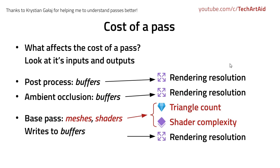So what can affect the cost of a pass? I recommend looking at its input and its output. If something takes in the screen and the g-buffer but not any geometry, like the post-process does, then it will be pixel-bound — working on pixels — and won't be affected by the amount of triangles in your scene or other optimization issues of your meshes. The same goes for ambient occlusion. By knowing how ambient occlusion works in Unreal, you will know that geometry doesn't affect its cost, because ambient occlusion is a post-process operation using the hierarchical z-buffer and the g-buffer — for example, normals.